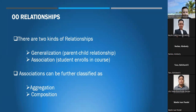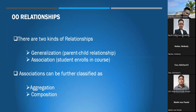Object-oriented relationships: there are two kinds of relationships. The first is generalization — a parent-child relationship. The second is association — for example, a student enrolls in a course. Association can be further classified as aggregation and composition.